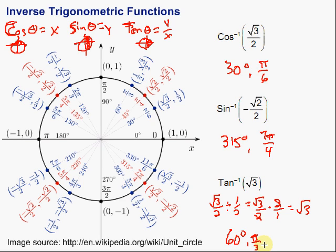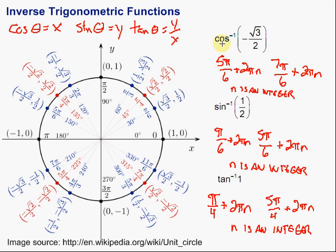Inverse trigonometric functions: for it to be a function, we have to restrict it to a particular area so that we don't have any repeating values. The Cosine is restricted to the top two quadrants. The Sine and Tangent are restricted to quadrants one and four. We denote those restricted versions — the functions — using capital letters: capital C, S, and T. For the general relation, remember there's an infinite number of potential angles that yield those trigonometric values, and we account for those by adding plus 2π times n, where n is an integer.